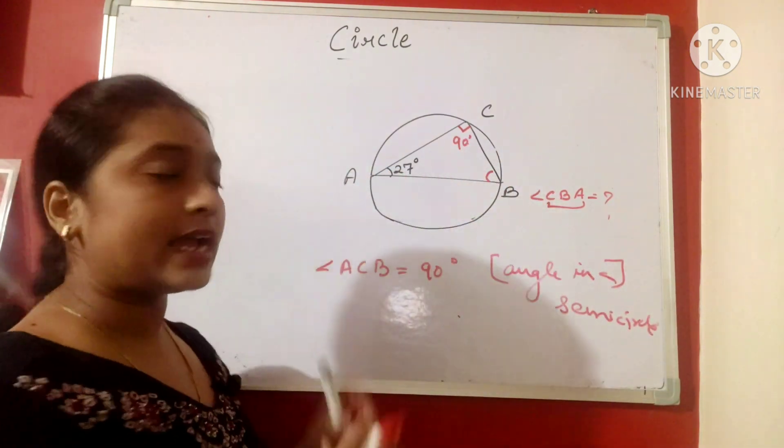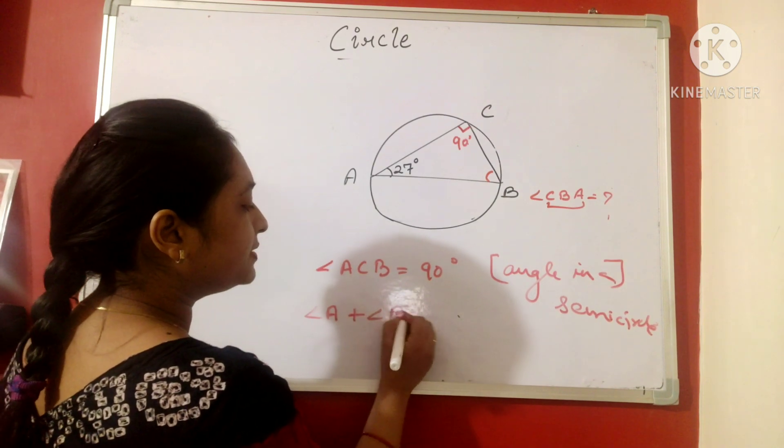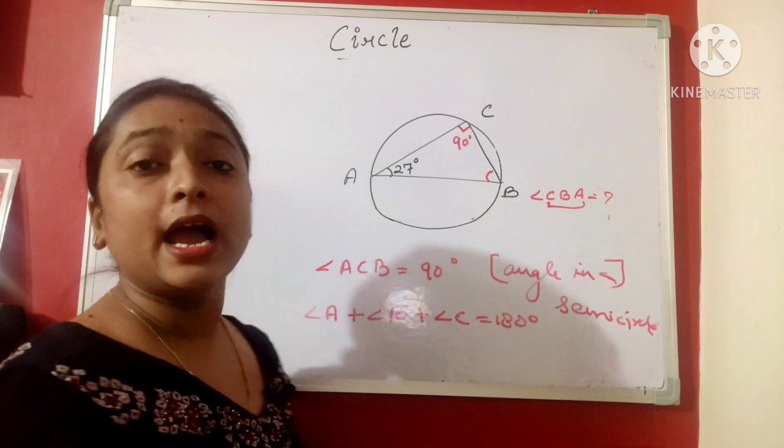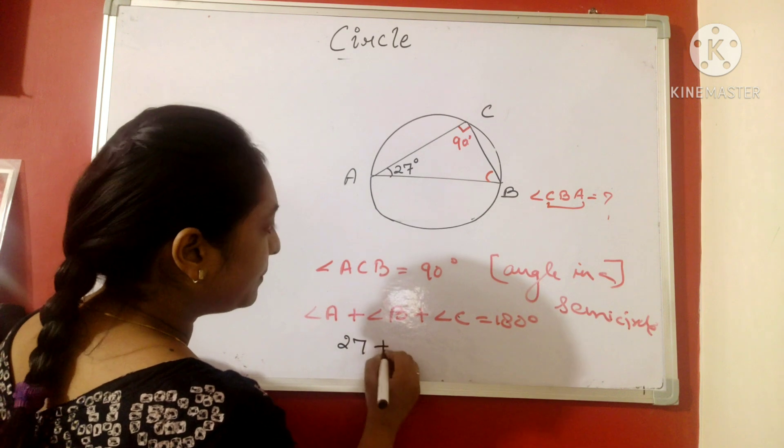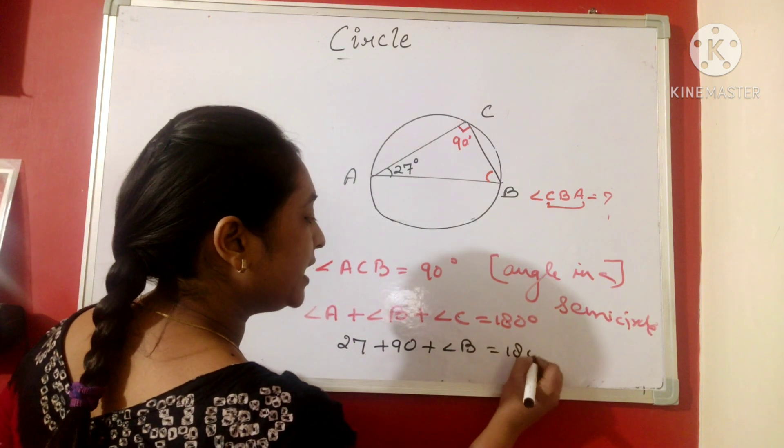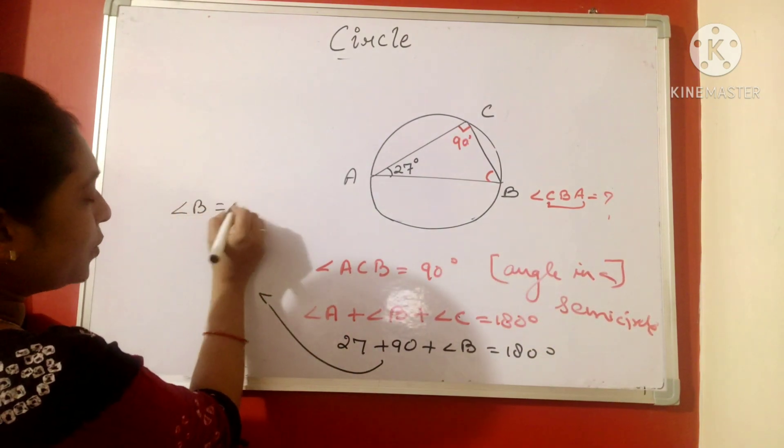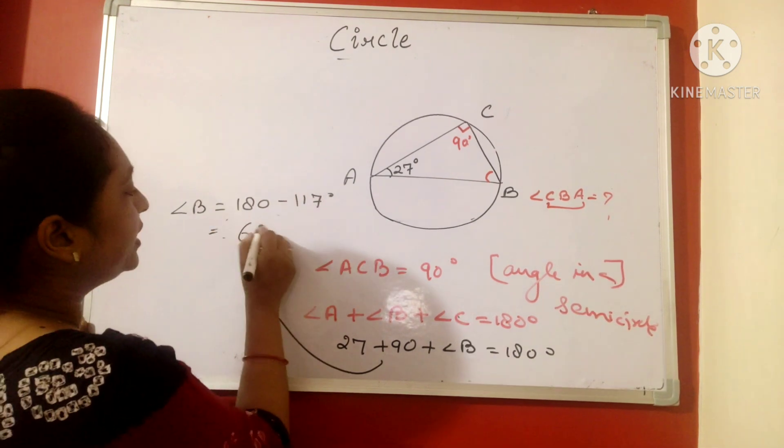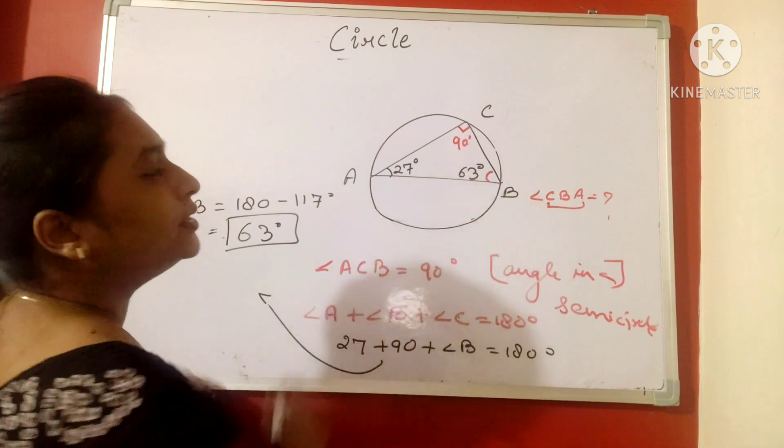Now, if we know two angles and this is a triangle, then we always know angle A plus angle B plus angle C is equals to 180 degree. And the reason will be angles of a triangle. So, 27 plus 90 plus this angle B is equals to 180 degree. From here, we get angle B is equals to 180 minus 117 degree, which will give 63 degree. So, angle B will be 63 degree.